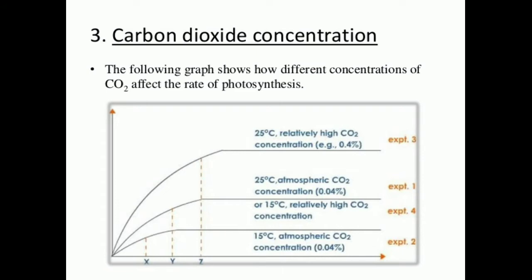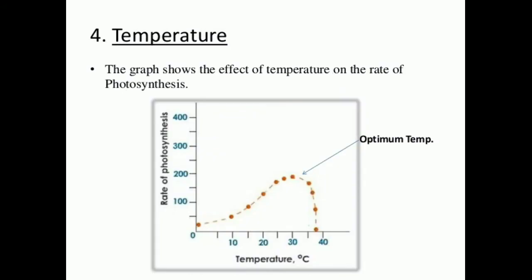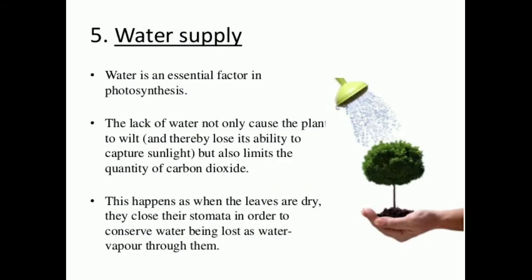The next important factor is carbon dioxide concentration. An increase in CO2 concentration increases the rate of photosynthesis, but its concentration beyond a certain level decreases the rate. Regarding temperature, the rate of photosynthesis is initially high at high temperatures. The optimum temperature range is 25°C to 35°C. At temperatures around 0°C, the enzymes stop working, and at very high temperatures the enzymes are denatured. A graph shows the effect of temperature on the rate of photosynthesis.